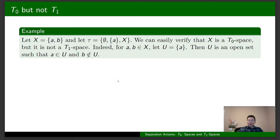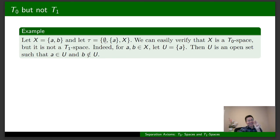Now I am going to talk about some examples of T0 spaces that are not T1 spaces. The first example is very simple. Let X be the set consisting of two elements a and b, and let tau be this collection of subsets of X. We can easily verify that tau is a topology on X, and therefore X with tau is a topological space. How come X is a T0 space? Let's take two distinct elements in X — they have to be a and b, because a and b are the only two distinct elements in X.